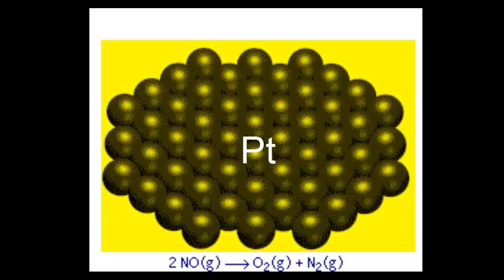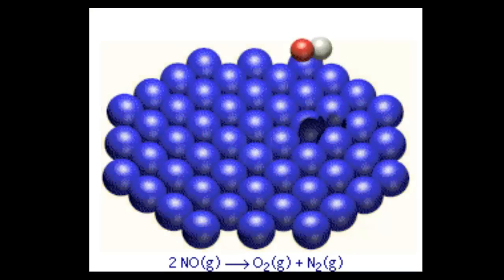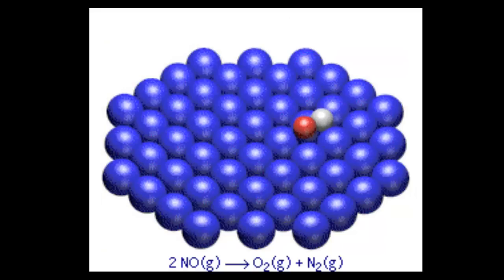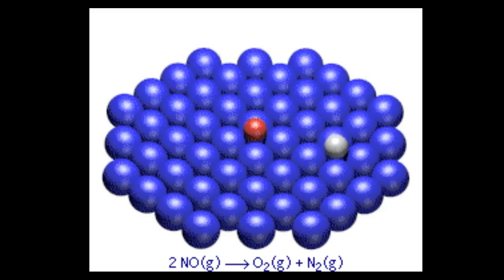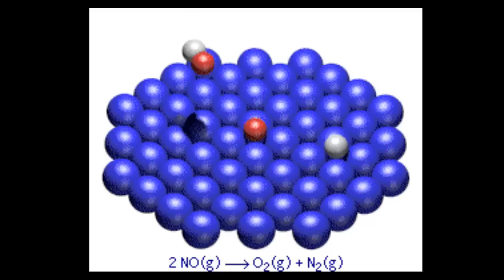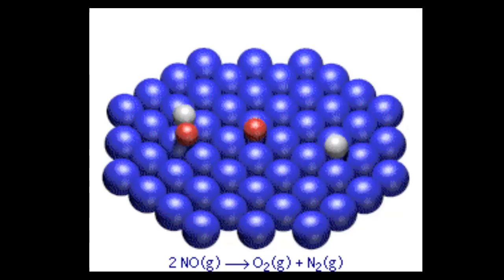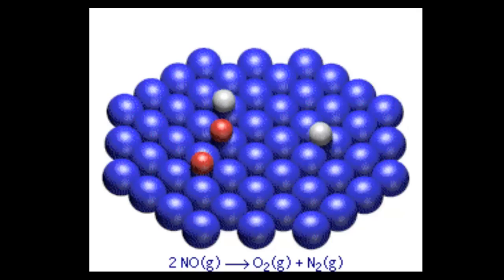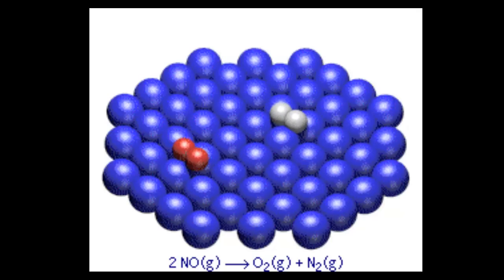Here's an atomic level illustration of a platinum catalyst in automobiles. The catalyst facilitates the decomposition of nitrogen monoxide rapidly. As the nitrogen monoxide molecules contact the surface of the catalyst, the covalent bond between the nitrogen and oxygen is broken, and the two atoms rejoin with their own type to form oxygen and nitrogen gas.